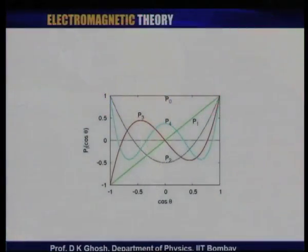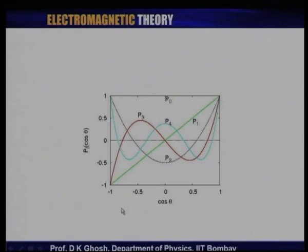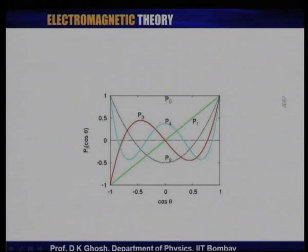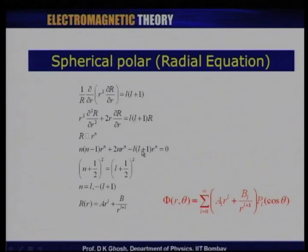Here is a picture of what P(cos theta) looks like, plotting P against cos theta — equivalently, plotting P(mu) against mu. P_0 is constant at value 1, parallel to the x-axis. P_1 is cos theta, simply a straight line. P_2 is the quadratic. You notice that the function has as many nodes as the order of the polynomial.